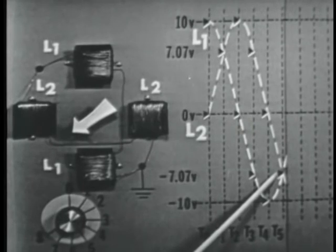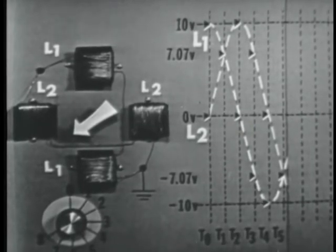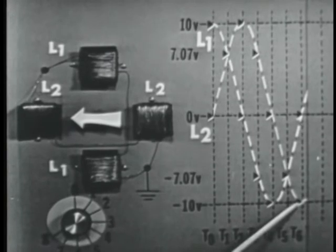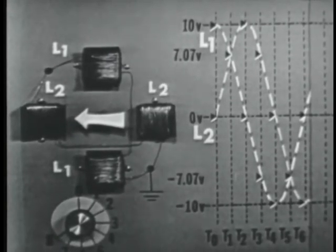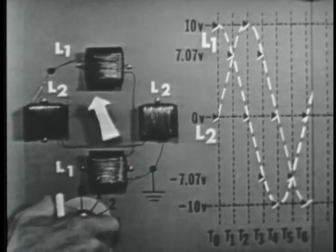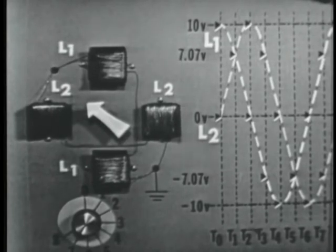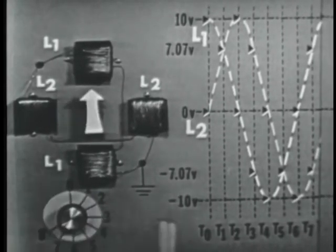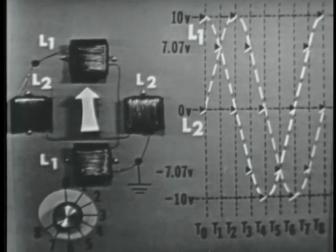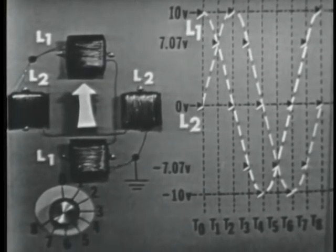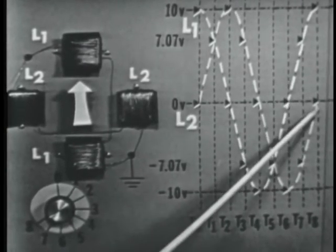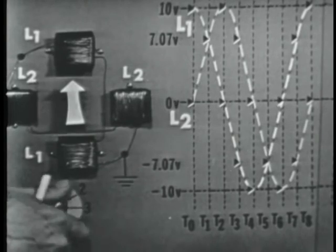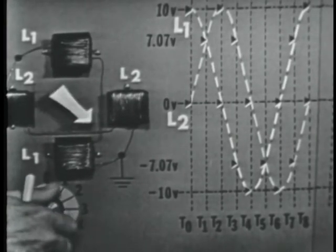At time five the pointer shows both coils energized, with L2 polarity also reversed. At time six only L2 has max negative applied — L2's field has reversed as indicated by the pointer; L1 has zero volts. At time seven both coils are energized — L2 at negative 7.07, L1 at positive 7.07. At time eight we're back at zero degrees where we started, with L2 at zero volts and L1 at max positive.